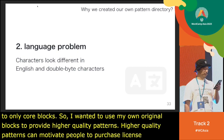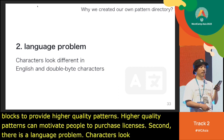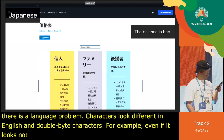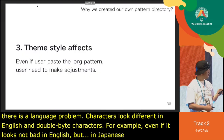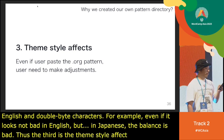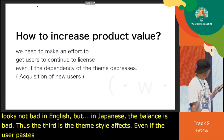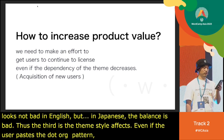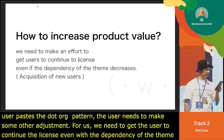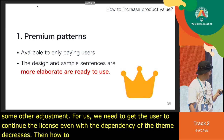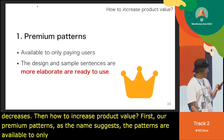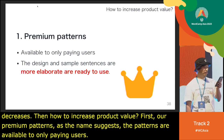Second, there is a language problem. Characters look different in English and double-byte characters. For example, even if a design looks fine in English, in Japanese the balance can be bad. Third is the effect of the same styles — even if users paste a .org pattern, they need to make some adjustments. For us, we need to make an effort to get users to continue their licenses. Even if dependency on the theme decreases, we need to consider how to increase product value. As the first point, premium patterns — as the name suggests — are available only to paying users, and the design and sample sentences are more elaborate and ready to use.